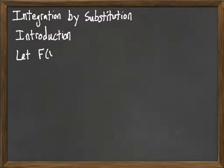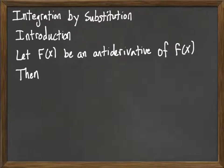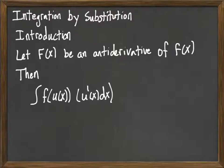So the idea is we let F(x) be an antiderivative of little f(x). Then we consider the integral of little f of u(x), a composite function, and attached with that we have u prime of x dx. Well, then our rule says that if F is an antiderivative, then that integral is actually equal to F of u(x).